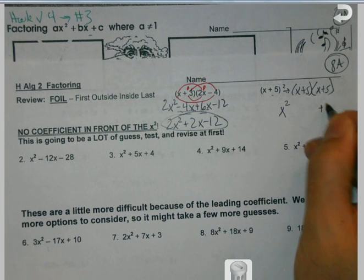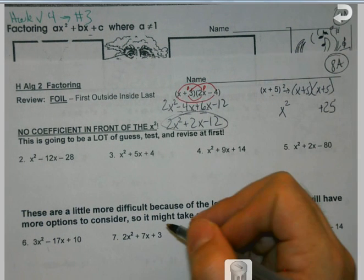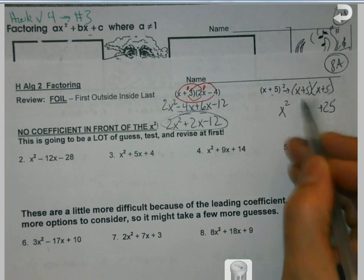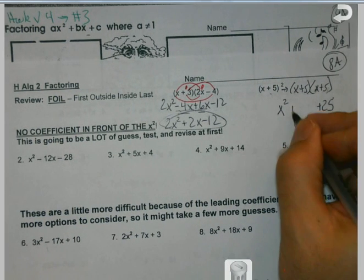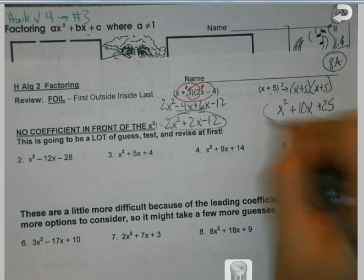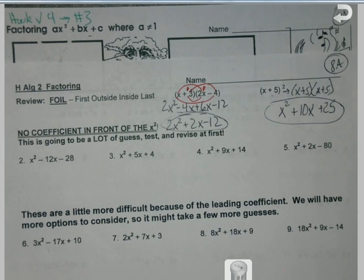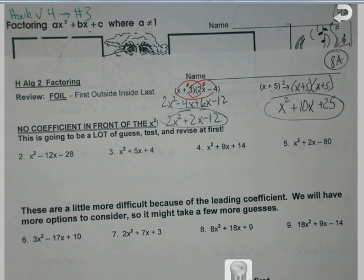And so you'd actually FOIL that out. And when you do, it's true, I still get the x² as my first term. And it's true, I still get the 25 at the end. But my outer and my inner, my 5x and my 5x, which gives me 10, can kind of get lost in the shuffle. So it's one of those things where you just want to be careful with some of the detail to make sure things are going okay.